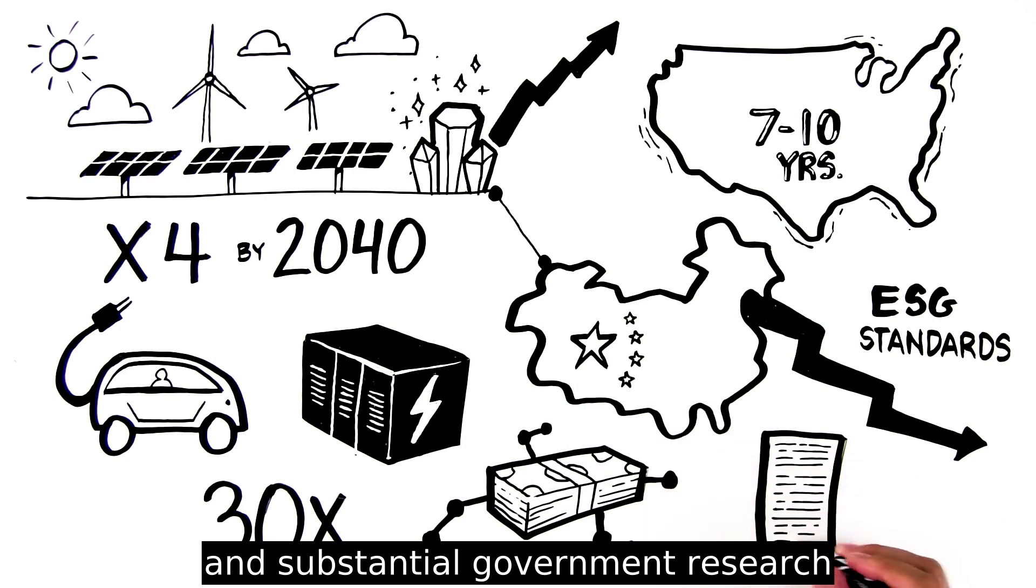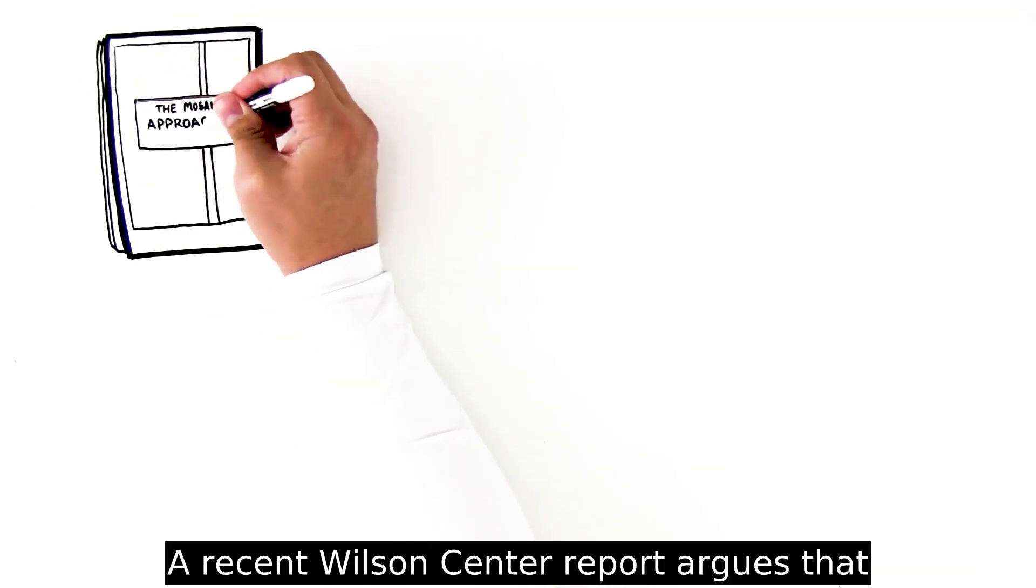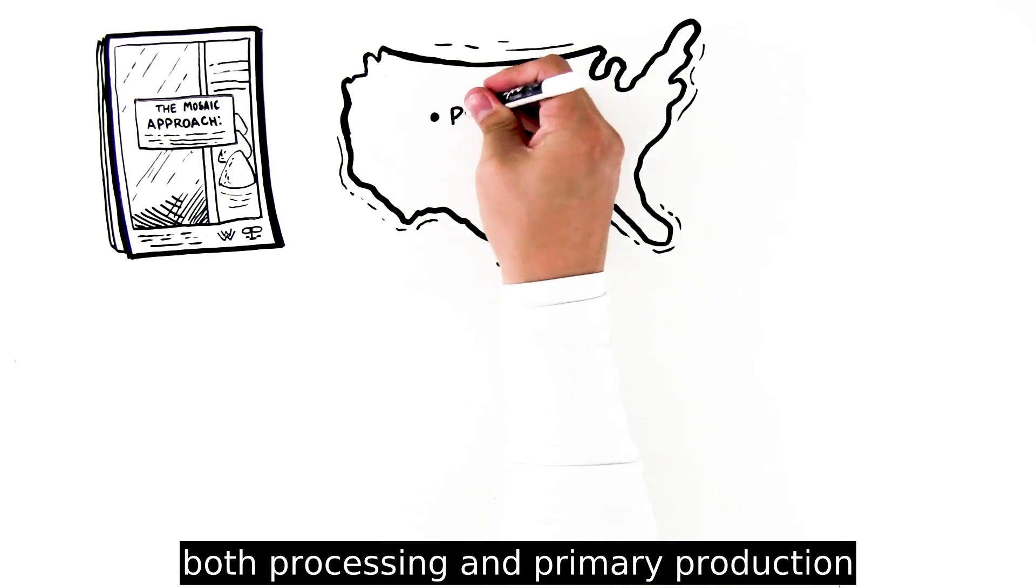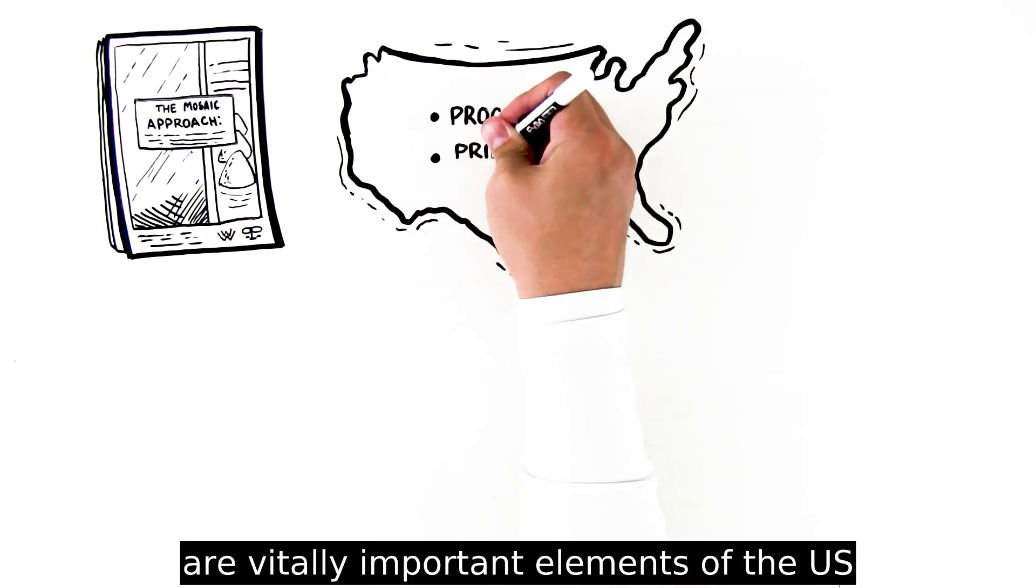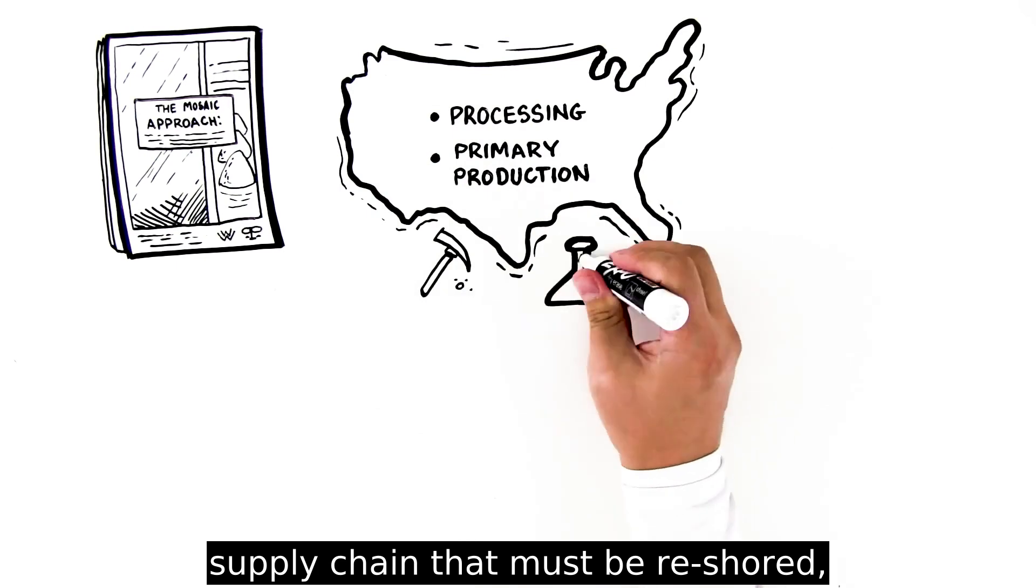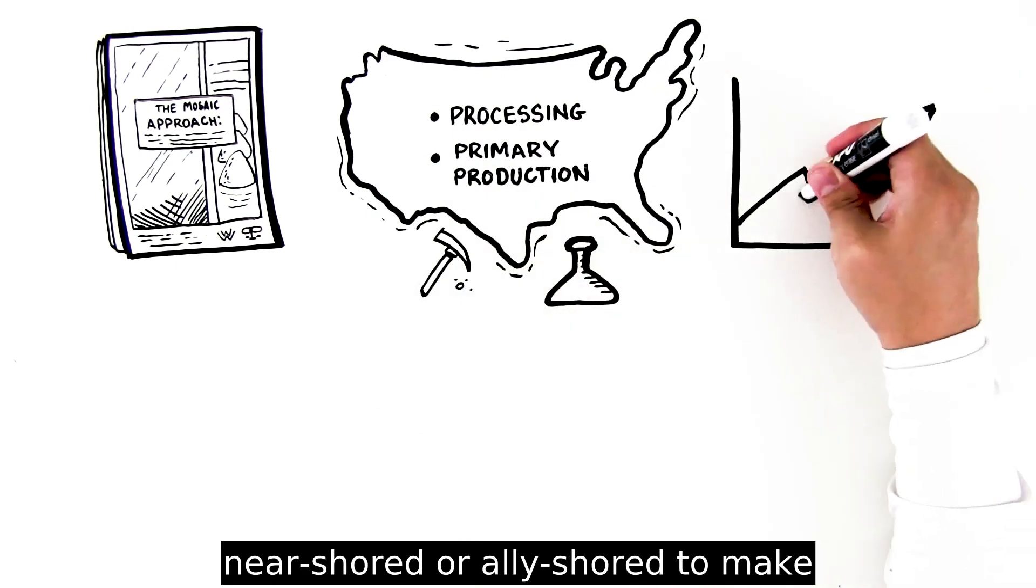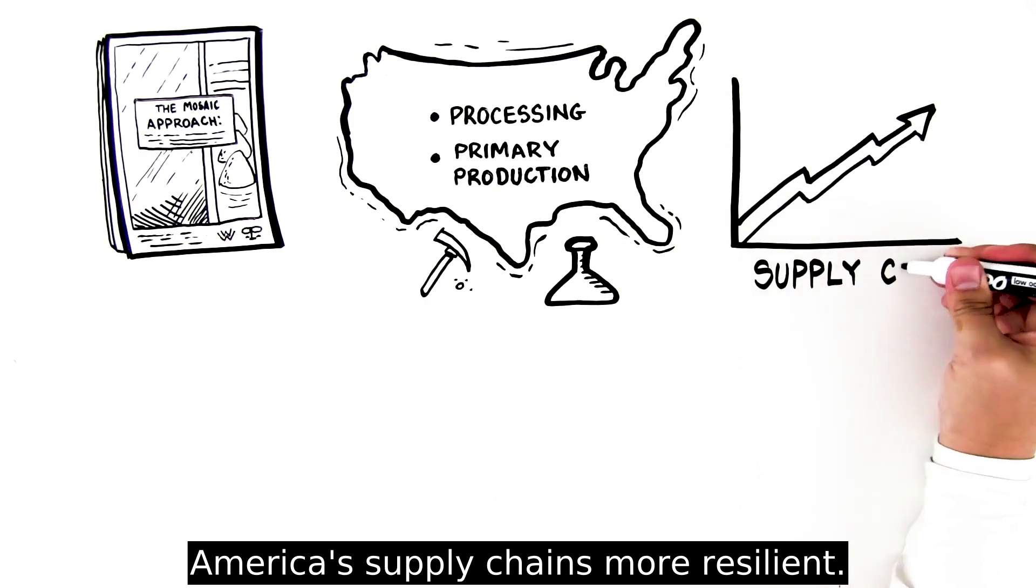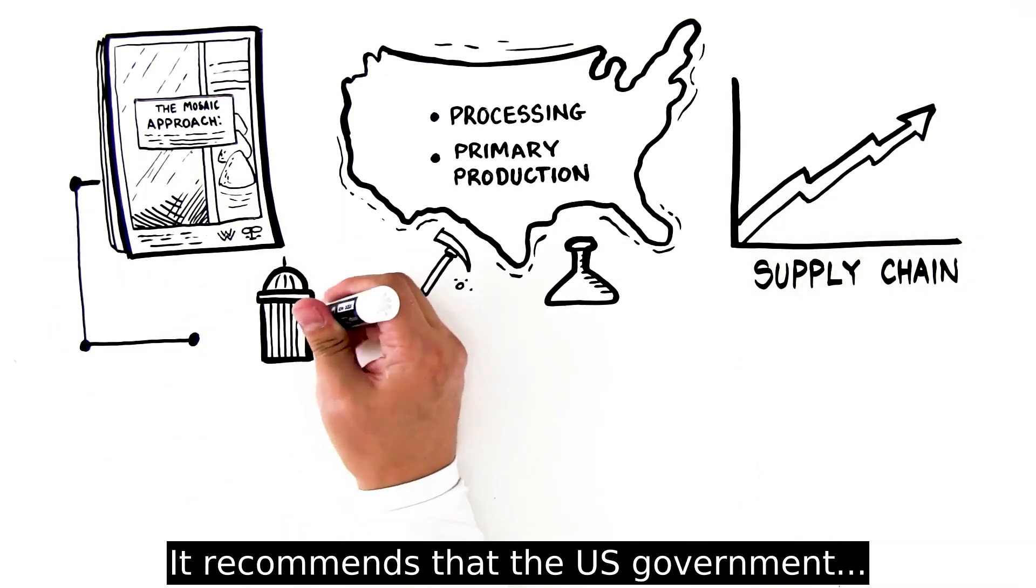A recent Wilson Center report argues that both processing and primary production are vitally important elements of the U.S. supply chain that must be re-shored, near-shored, or ally-shored to make America's supply chains more resilient.